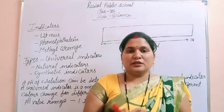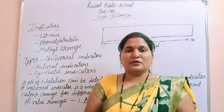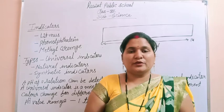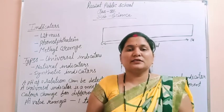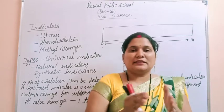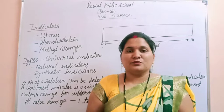In this book, there are three indicators. The first is Litmus, the second is Phenolphthalein, and the third is Methyl Orange.